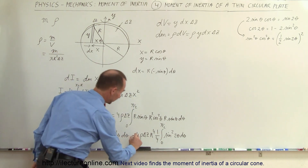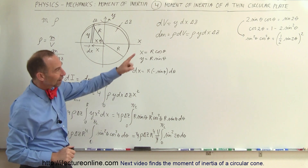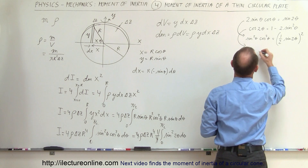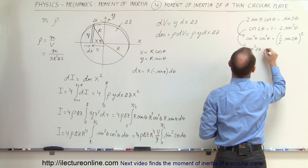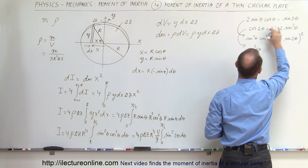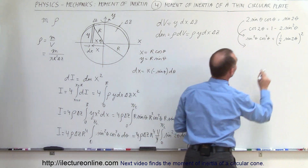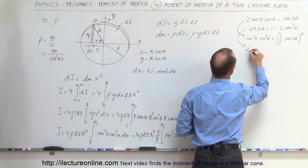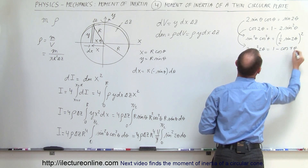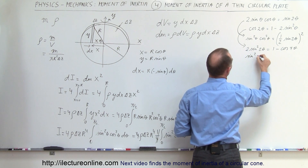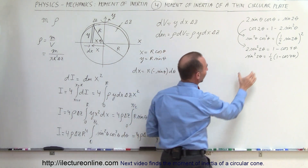We still need to integrate sine squared of 2 theta. Applying the identity for sine squared of a double angle: sine squared 2 theta equals one half times one minus the cosine of 4 theta. Pulling the one half outside the integral, we now have the density times delta z times r to the fourth times one half times the integral from 0 to pi over 2 of one minus the cosine of 4 theta d theta.